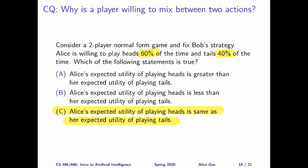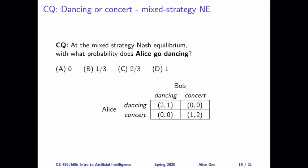For the next two questions, I'm asking you to derive the mixed strategy Nash equilibrium. For the first question, I'm asking: at the mixed strategy Nash equilibrium, with what probability does Alice go dancing — that is, with what probability does Alice play the top action? For the last question, I'm asking Bob's strategy: with what probability does Bob go dancing, meaning with what probability does Bob play the left action?